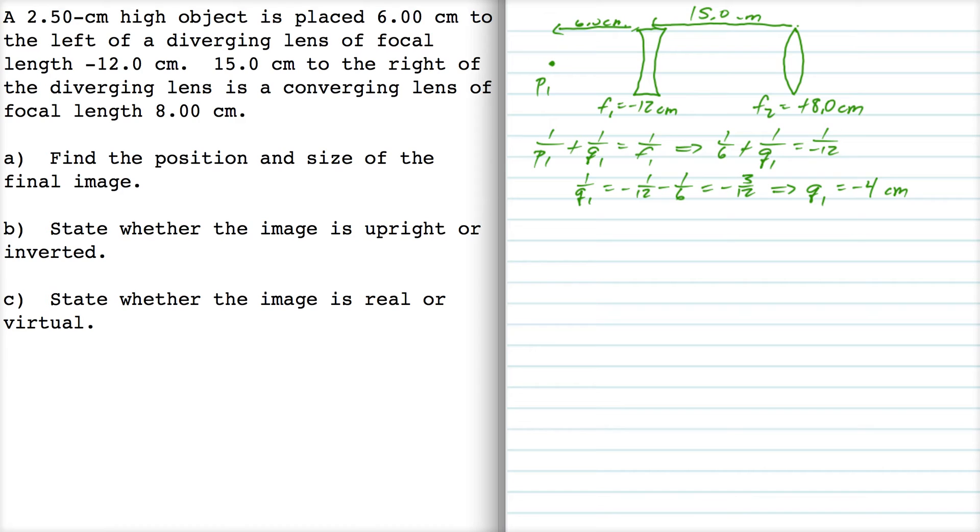Now given our sign conventions for lenses, that means that Q1 is out here in front of lens 1, 4 cm. So Q1 is P2. It's the object for this lens over here.